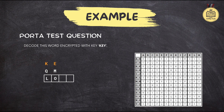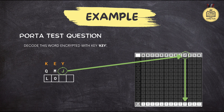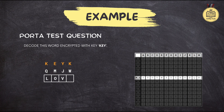Now let's decode the remaining letters. For the pair J and Y, we find the Y row and the ciphertext letter J — the column header reveals the plaintext letter V. And finally, for the pair W and K, we're back to the K row where we find the plaintext letter E above W. We've successfully transformed the ciphertext QMJW with the keyword KEY into the message LOVE.